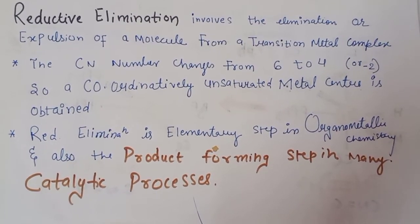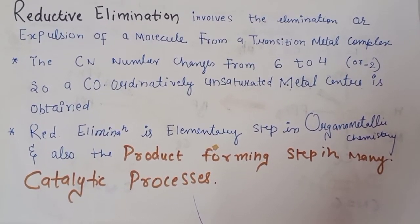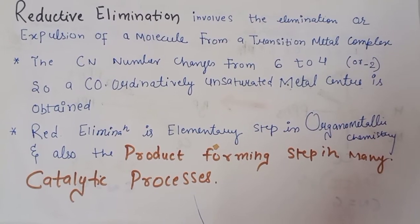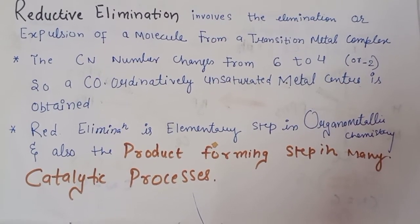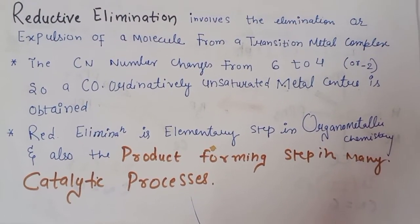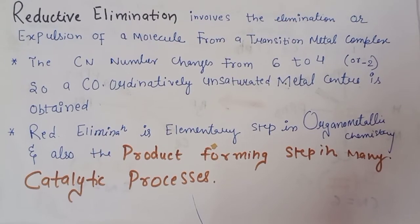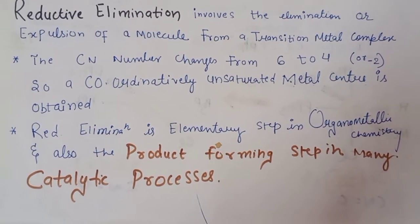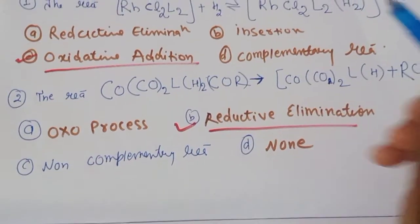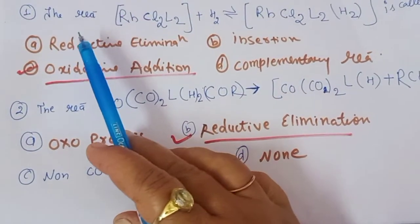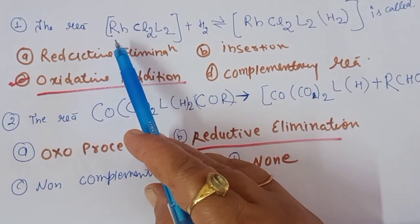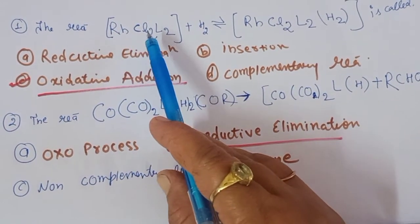In summary, reductive elimination involves the elimination or expulsion of a molecule from a transition metal complex. The coordination number changes by −2, a coordinatively unsaturated metal center is obtained, and reductive elimination is an elementary step in organometallic chemistry and a product-forming step in many catalytic reactions.